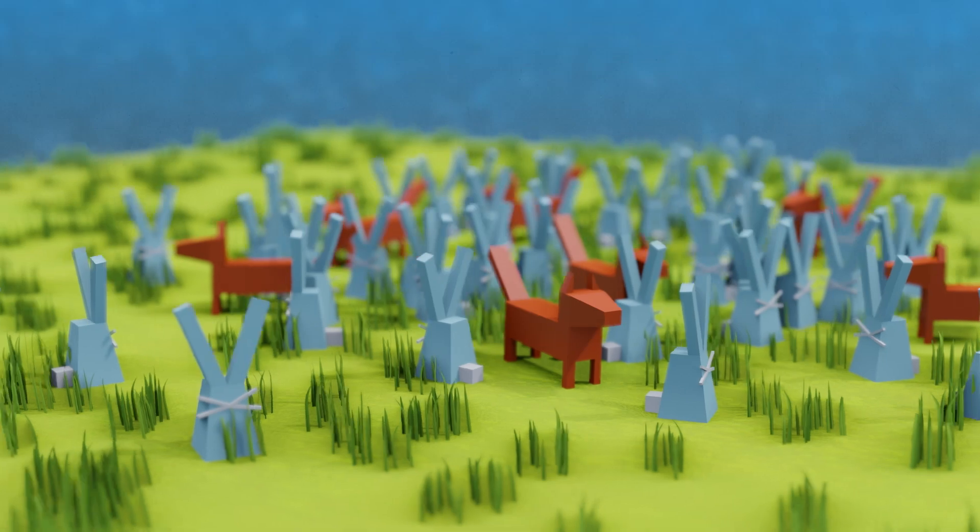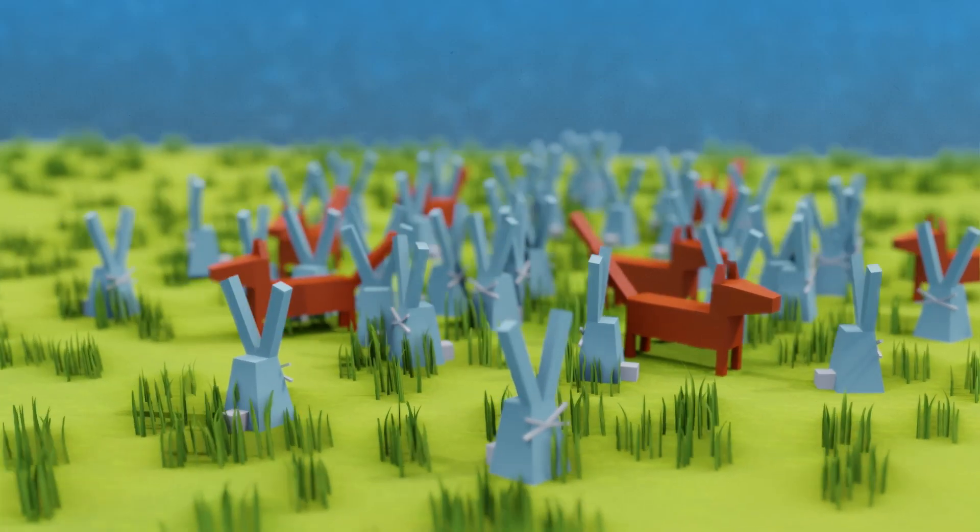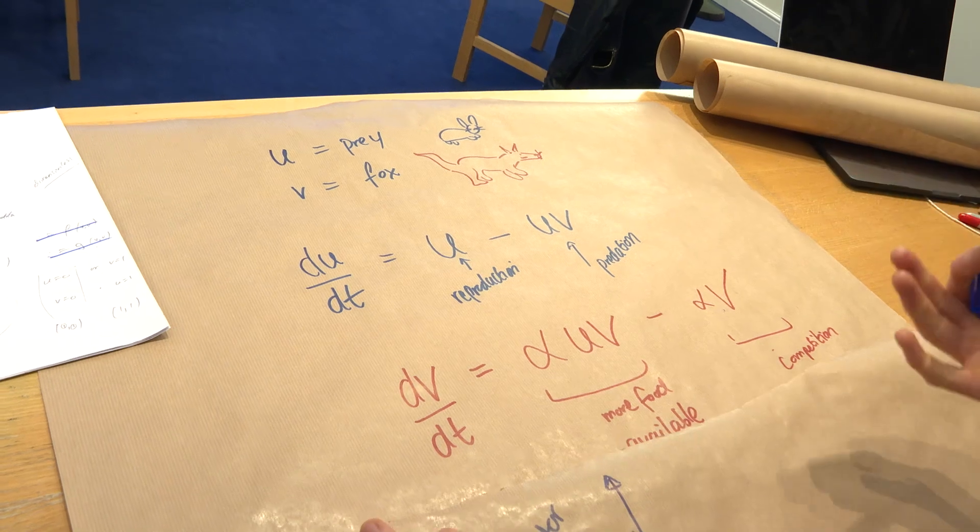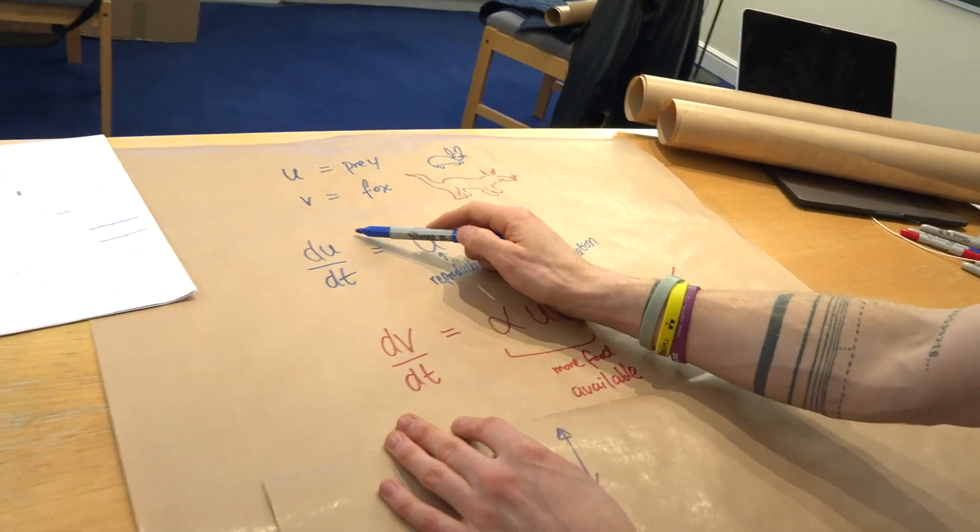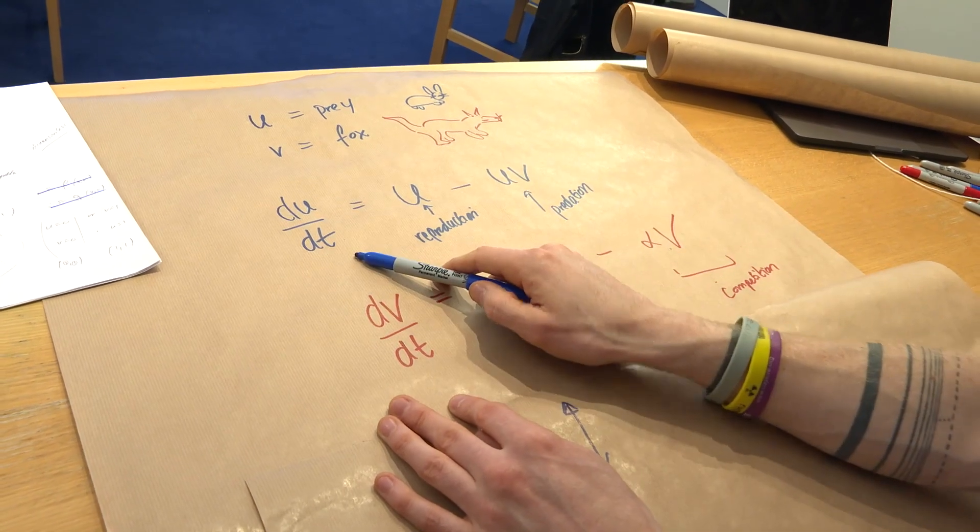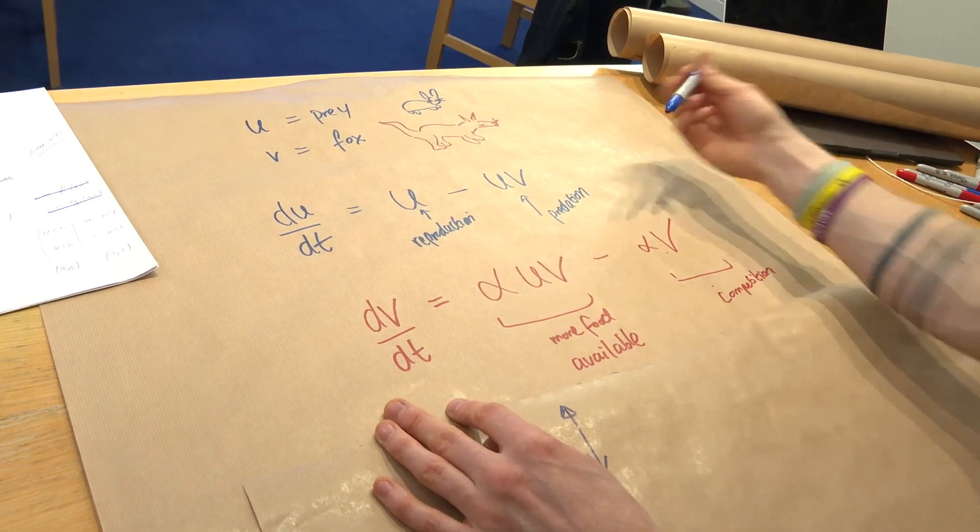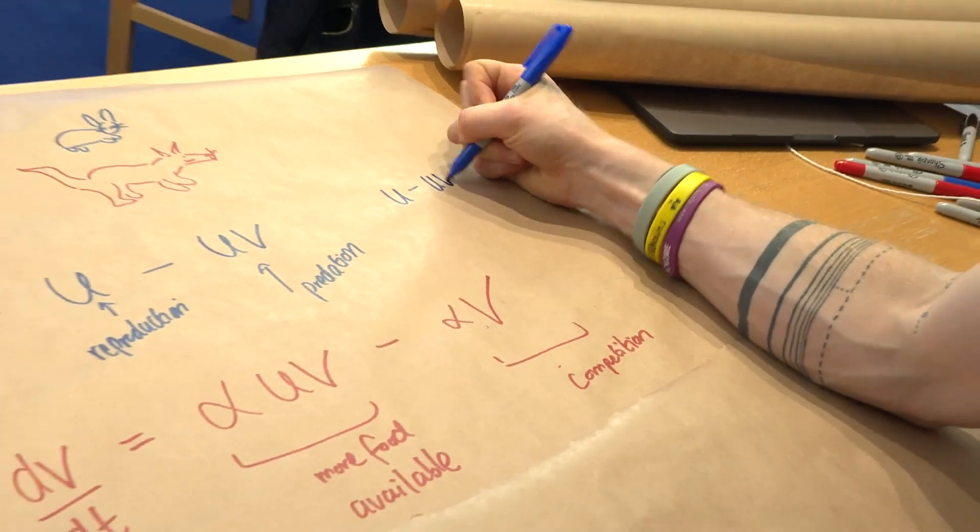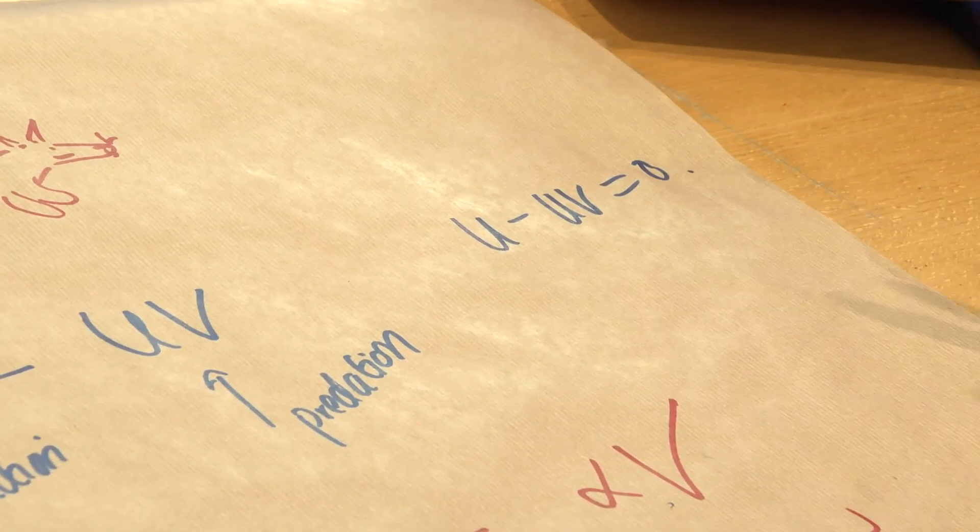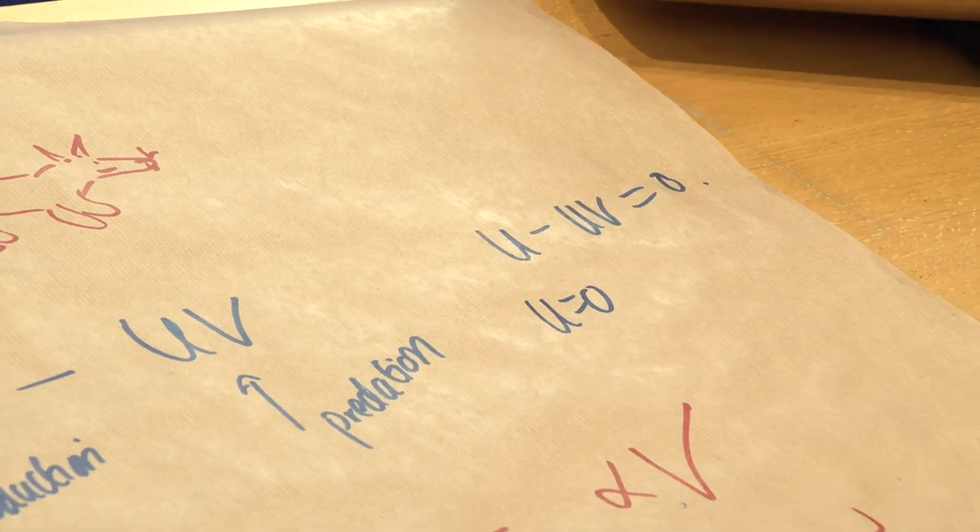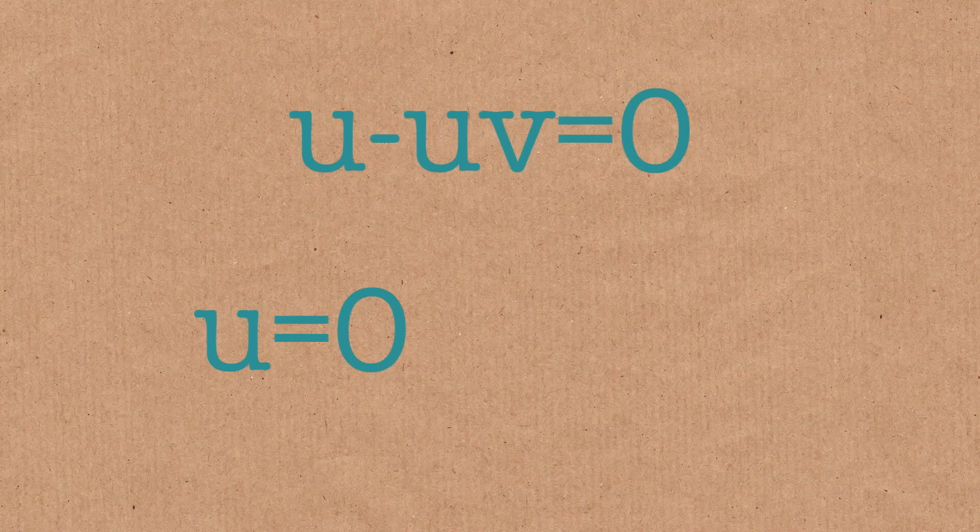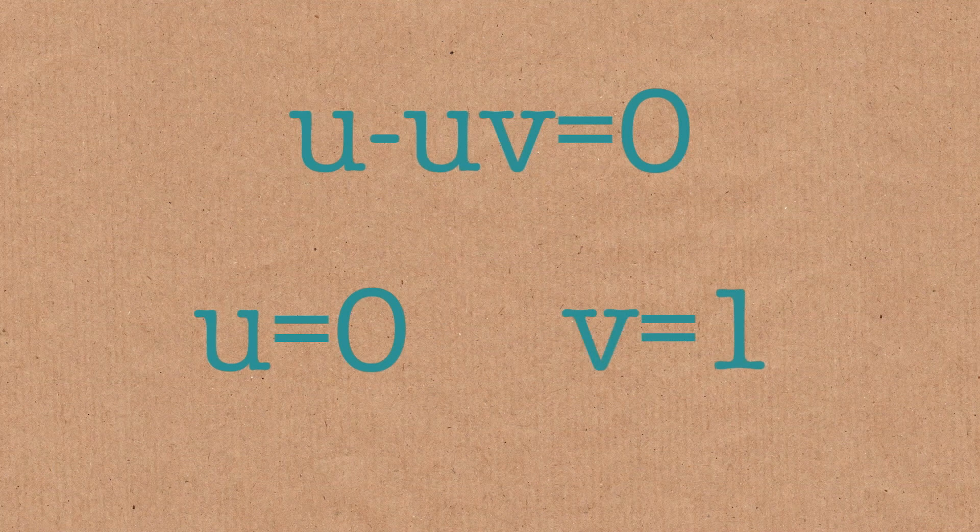And so what that means mathematically in this equation is that u will be equal to some constant number, and so if u is constant, it doesn't change with time because it's constant. That's the definition of constant. So that term goes. So to find which values of u our population is happy at, we just solve this equal to 0. So we've got to solve u minus uv equals 0. We need to find values of u and v which will satisfy this equation. So the first one would be u can be 0, then that works. And then the second one, you could also have, if u is not 0, then if v was equal to 1, you'd have u minus u.